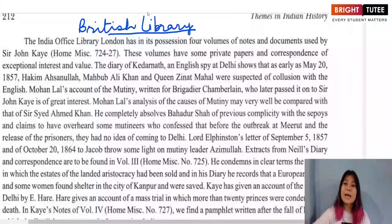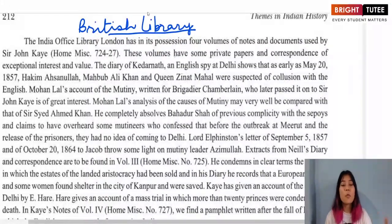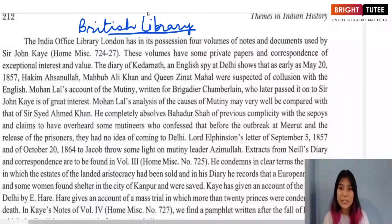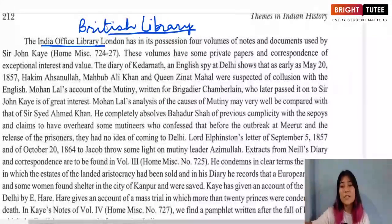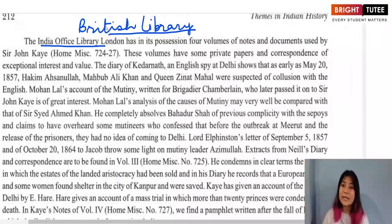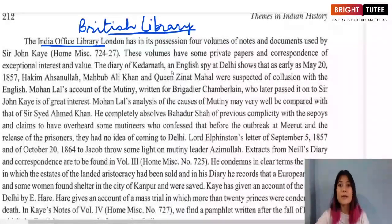The British Library has sections where you can borrow books and read, and also sections with official records of colonial officers and other papers related to Indian history. There we also find papers related to the mutiny or the Revolt of 1857. The British Library has a section called the India Office Library, or India Office Record, where many documents related to the mutiny can be found.